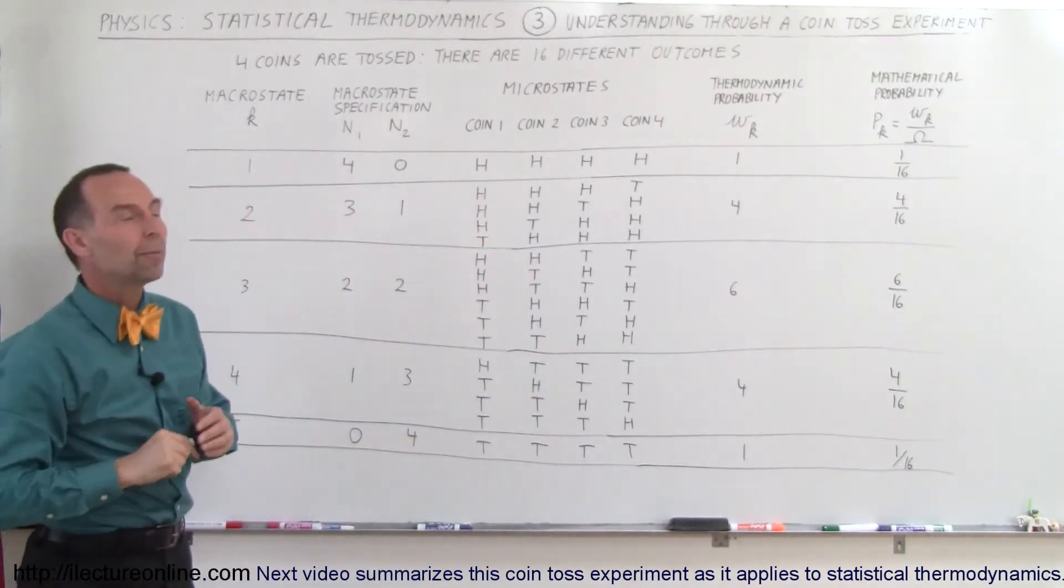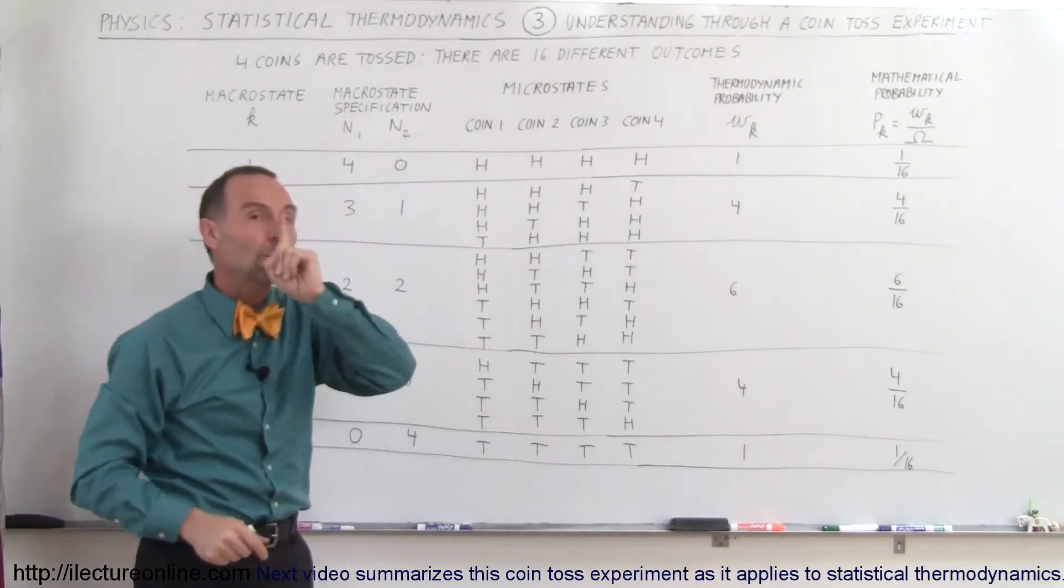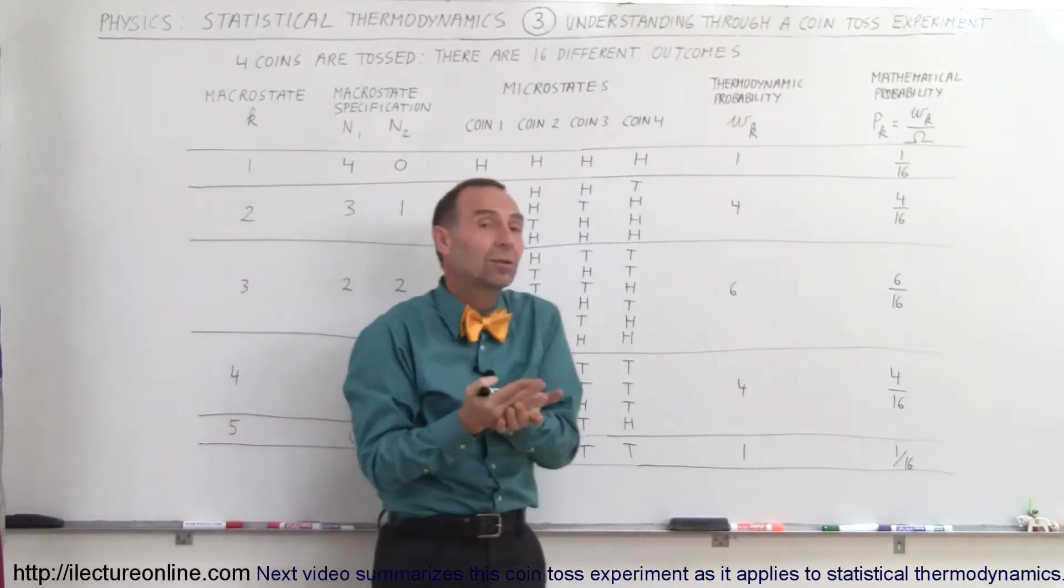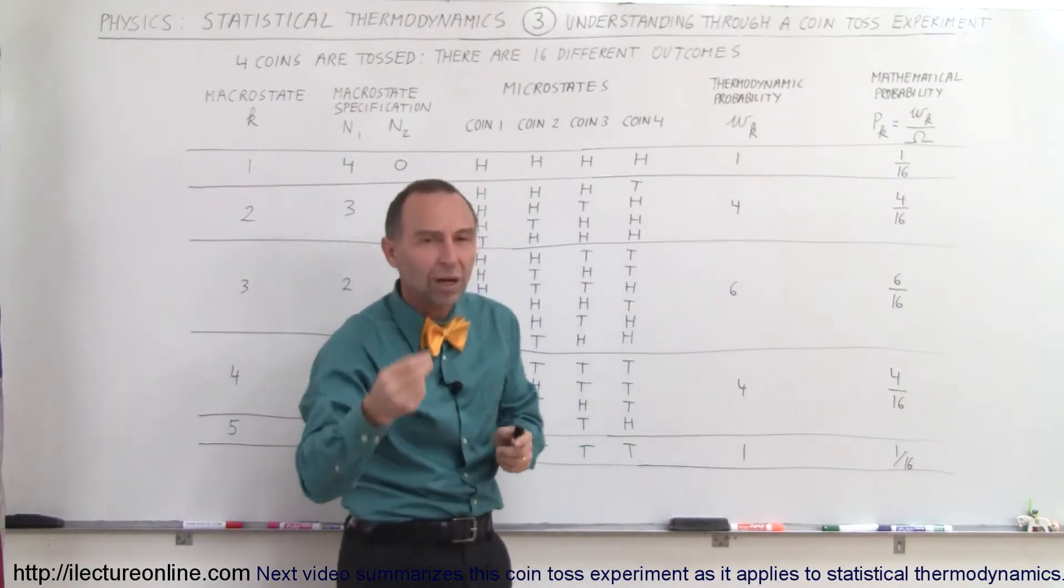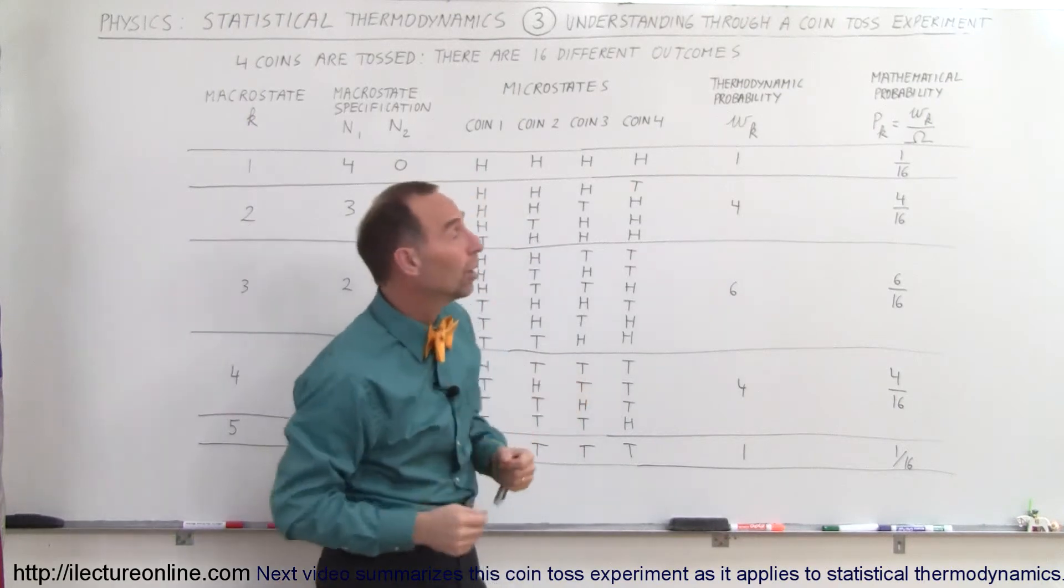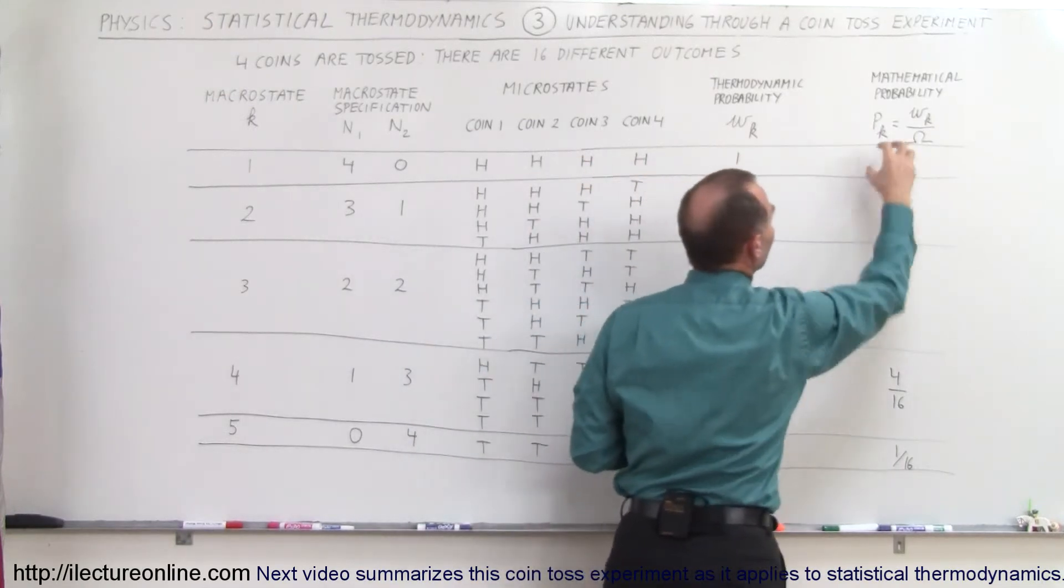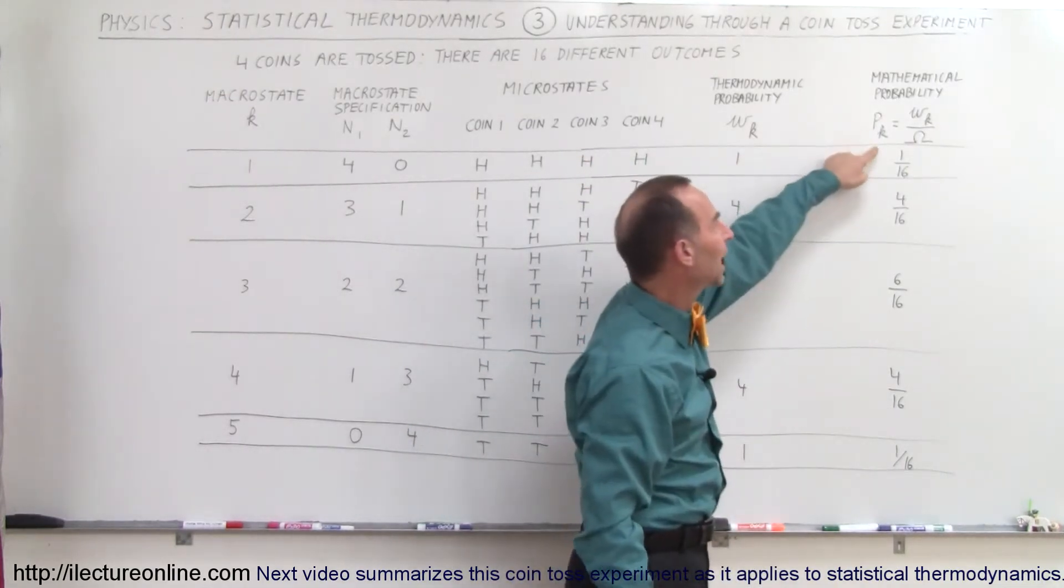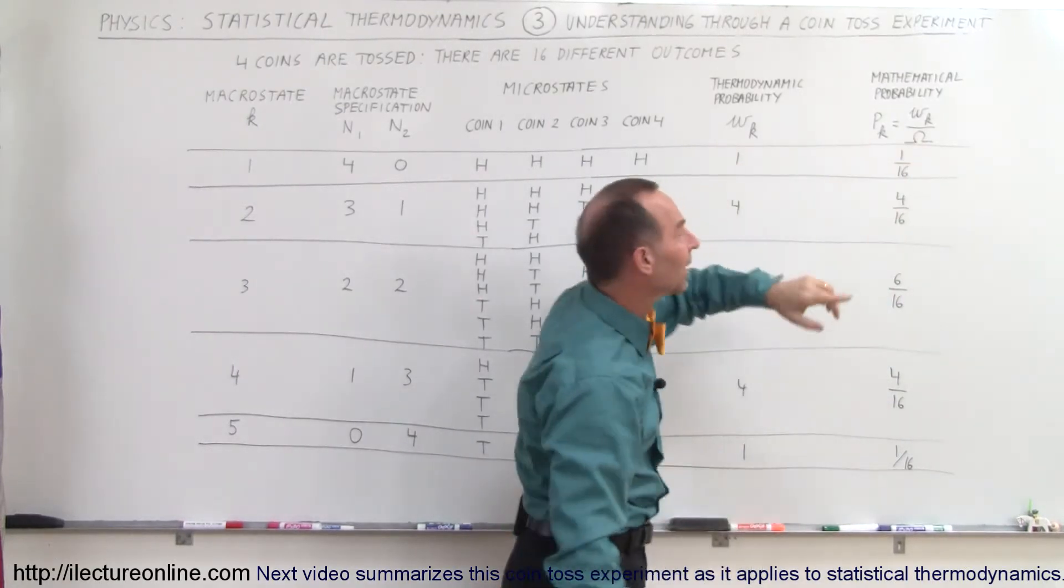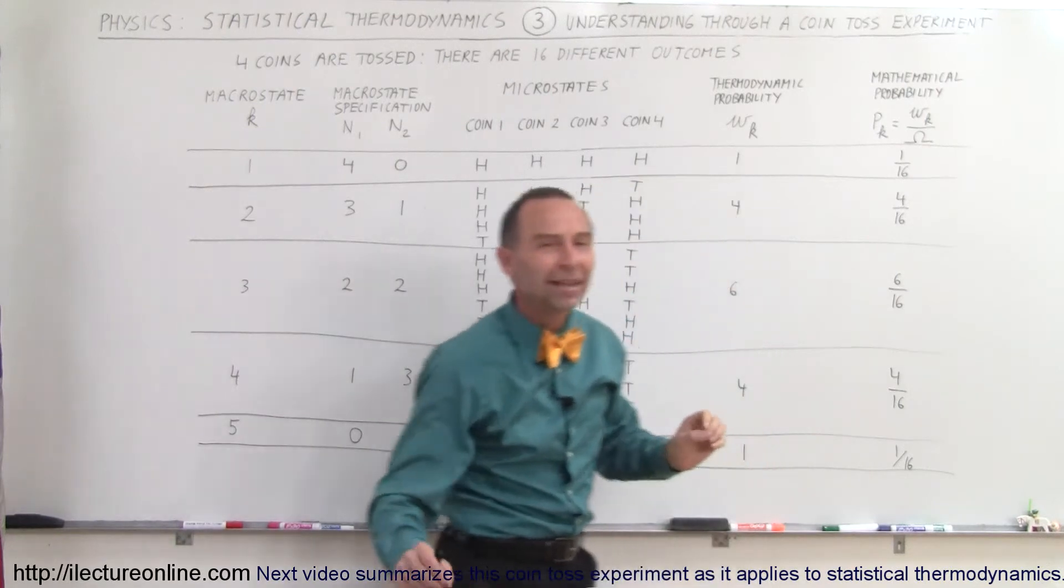So what is the thermodynamic probability? Well, there's only one micro state in that macro state. The thermodynamic probability is therefore 1. And the mathematical probability - what is the total probability out of 1 that this could happen? With probabilities in mathematics, we usually normalize it to 1. So there's 1 out of 16 chances that they'll all come up heads. We denote that with p sub k, and we divide the thermodynamic probability, 1, by the total number of outcomes, which is called omega. So with 16 different outcomes, omega equals 16.